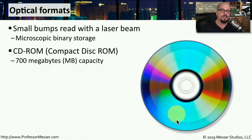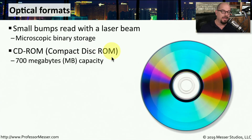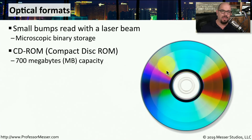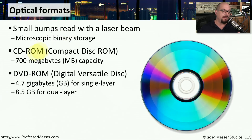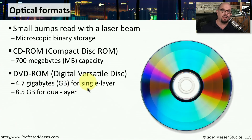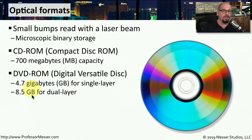One of the first types of optical formats on our personal computers was a CD-ROM, which stands for Compact Disk ROM. This disk was able to hold approximately 700 megabytes of information. An upgrade to CD-ROMs came with DVD-ROMs, the Digital Versatile Disk. A DVD will hold 4.7 gigabytes of information on a single-layer DVD-ROM, and 8.5 gigabytes for a dual-layer DVD.